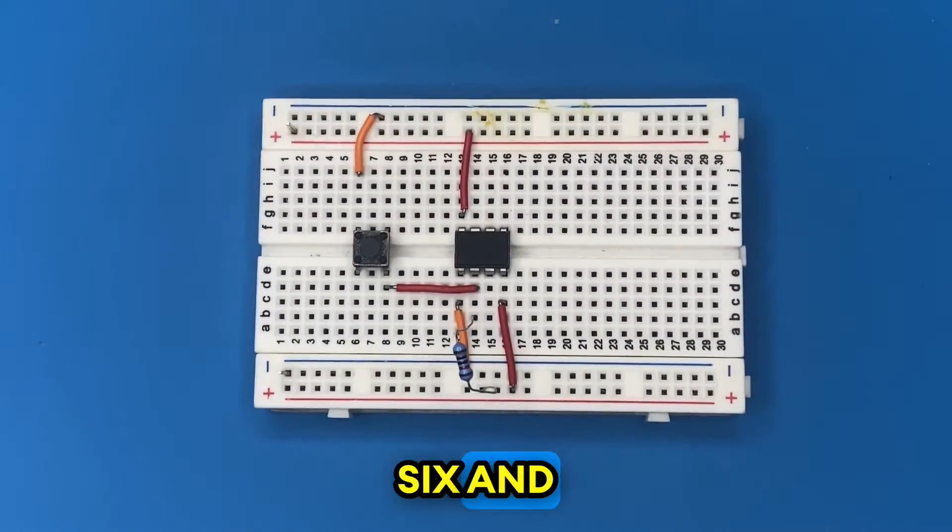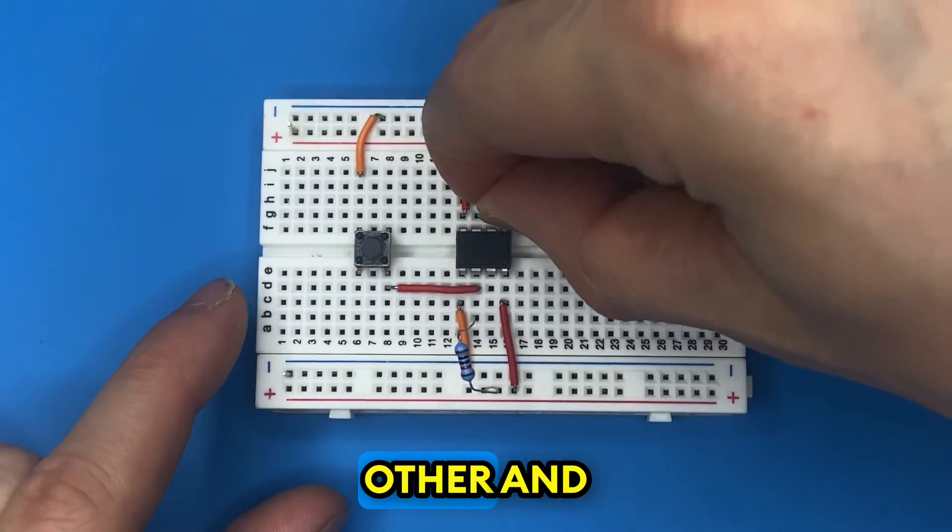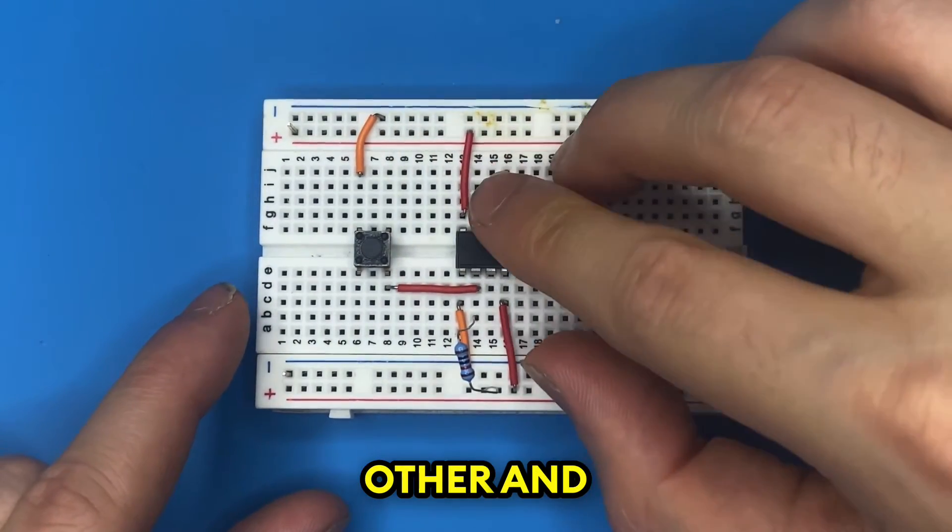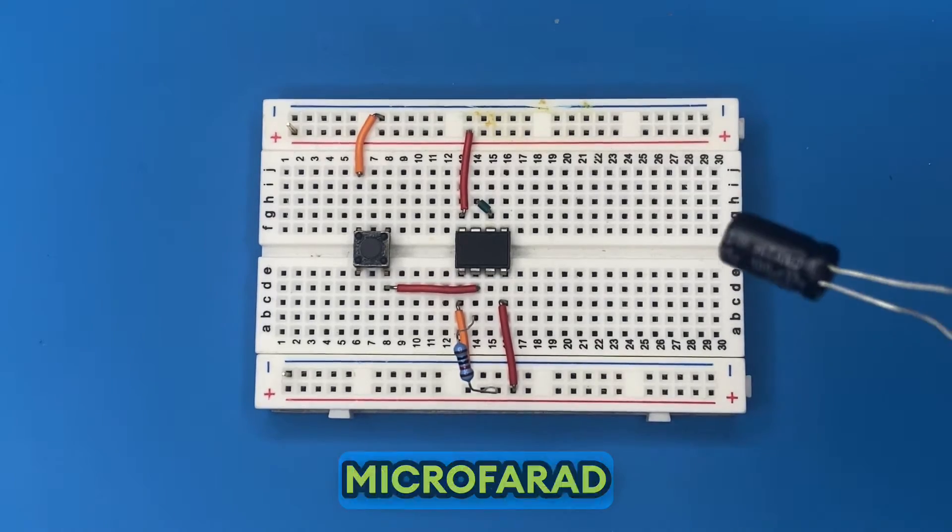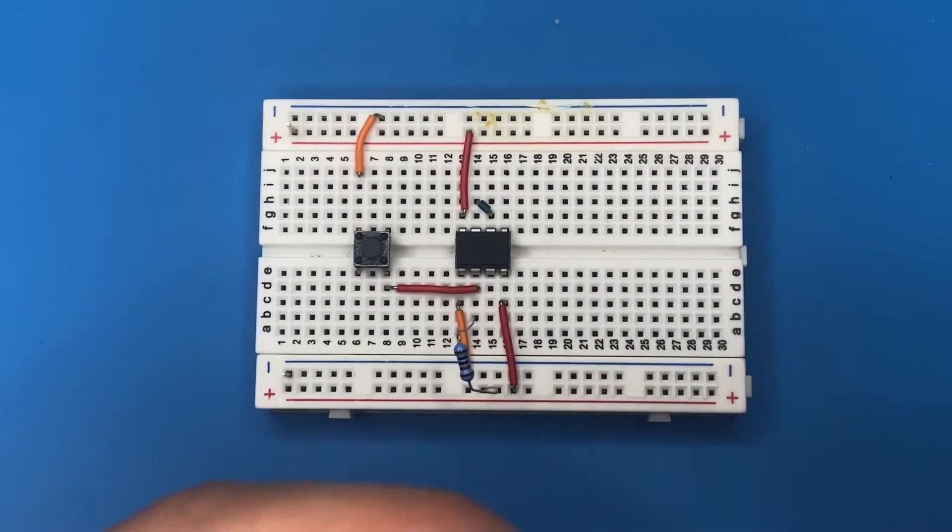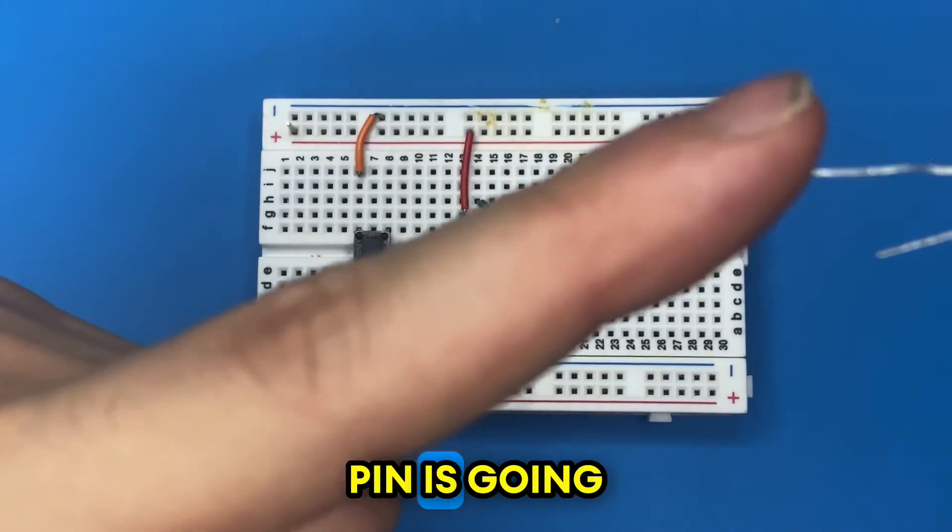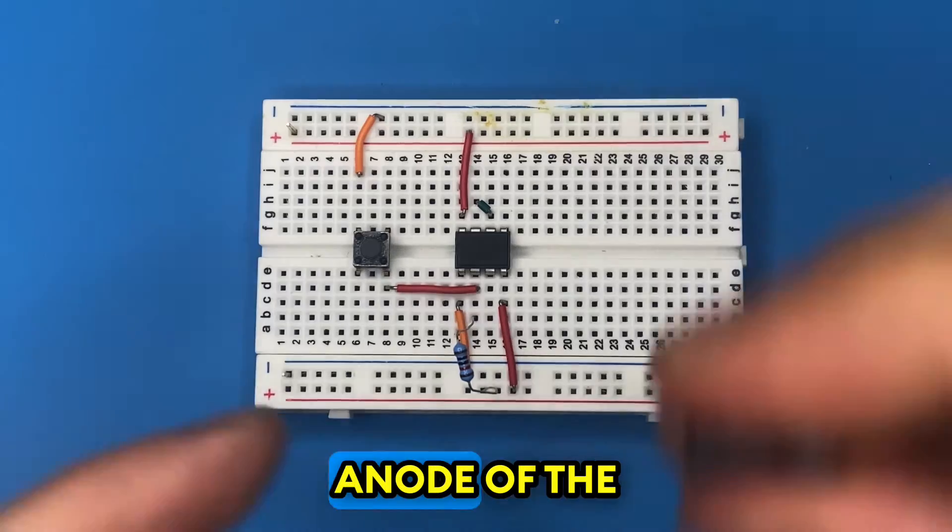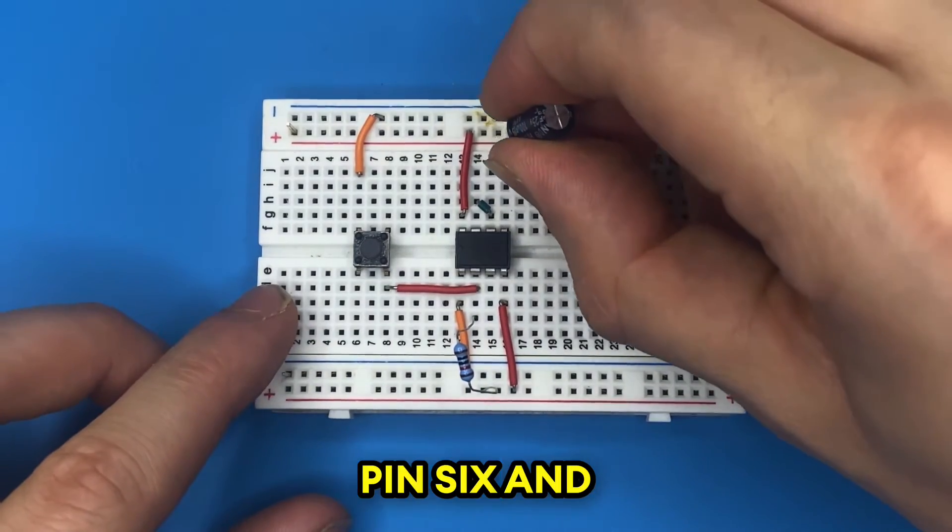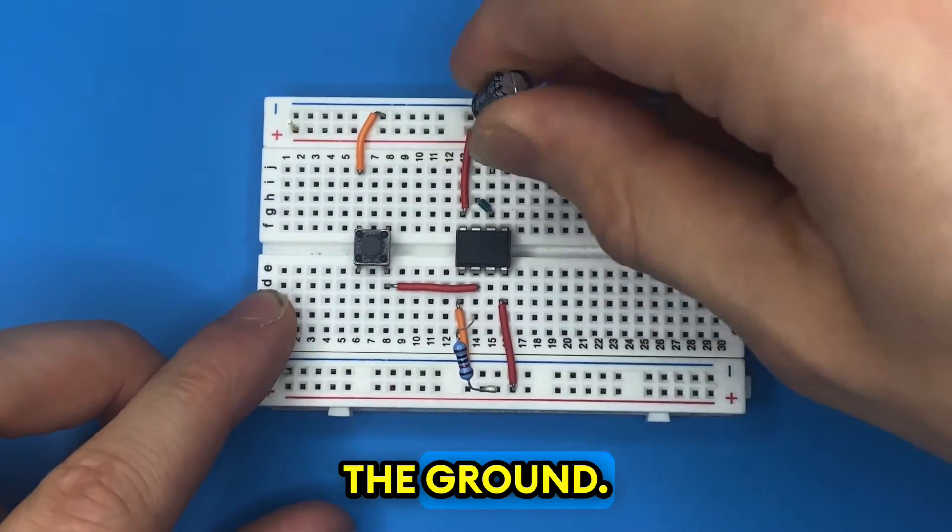Connect pin six and seven of the IC to each other. Let's grab our 100 microfarad capacitor. The longer pin is going to be the anode and the shorter one is cathode. I'm going to connect the anode of the capacitor to pin six and cathode to ground.